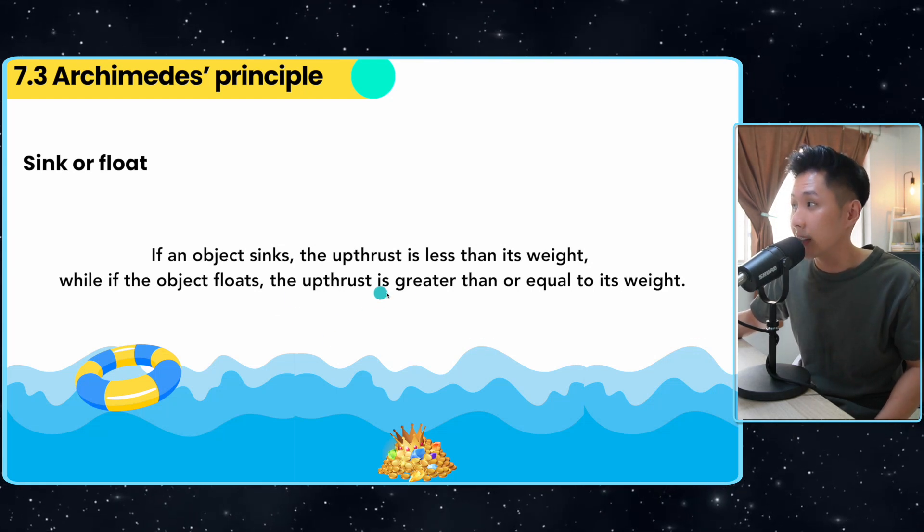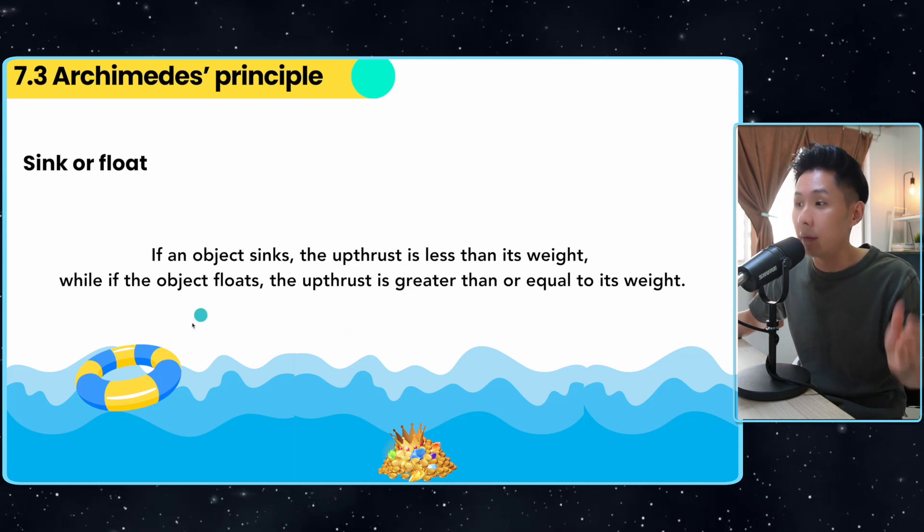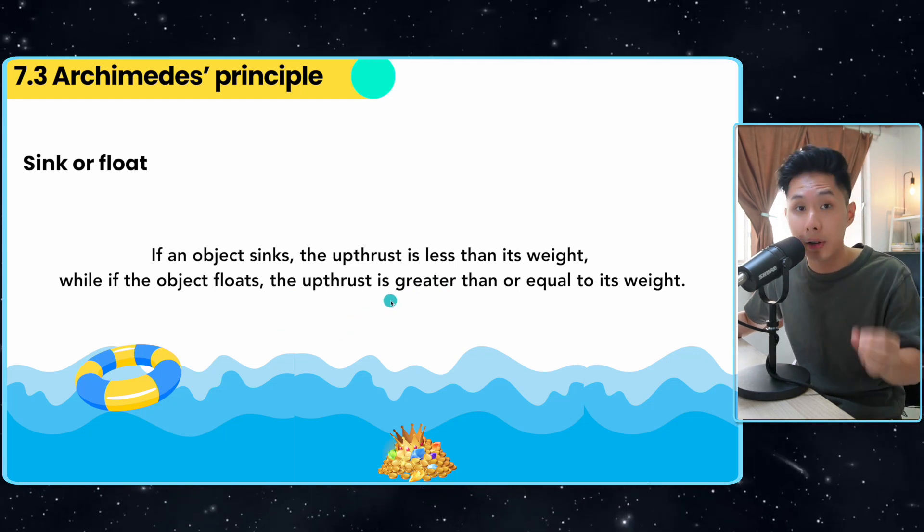If an object sinks, the upthrust is less than its weight because it's not enough to support the weight. But if it floats, it means the upthrust is greater than its weight.